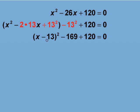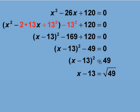The expression in parentheses becomes a binomial square, and then we simplify the numerical terms. Now we can solve for x. Take the square root of both sides and then isolate x on one side of the equation.